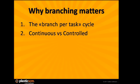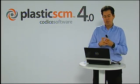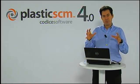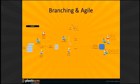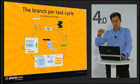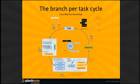I'm going to explain two important concepts in Plastic SCM. The first one is the branch-per-task cycle, and the second is how controlled integration can be the future of continuous integration. Let me position this inside the whole Scrum structure — I'm focusing on the daily Scrum, what you do on a daily basis. At a certain point in time you have your sprint backlog split into different tasks, and each task is going to be the centerpiece of the whole development cycle. Each task is going to be a branch.